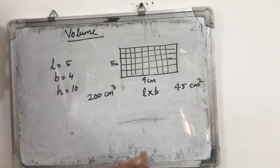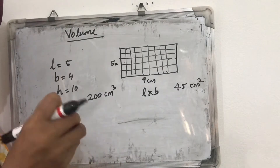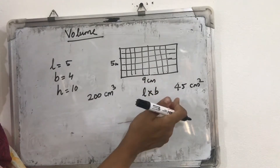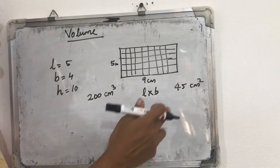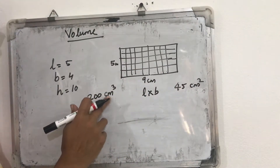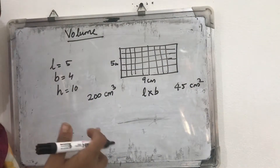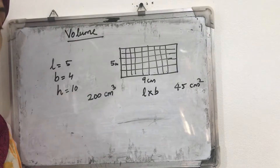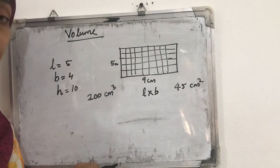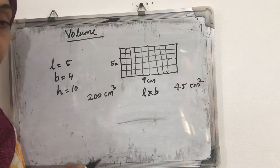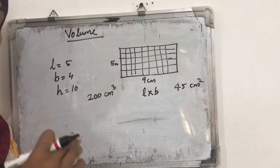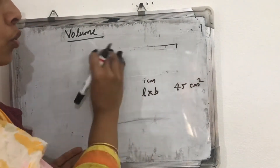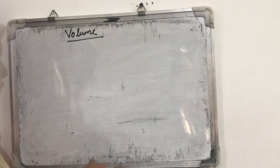The unit is cubic centimeters — because we are counting how many unit cubes there are. In plane shapes we used unit squares, so the unit was square centimeters; here we use unit cubes, so the unit is cubic centimeters or cm³. Since it is not always possible to count unit cubes directly, we find general equations for cube, cuboid, and cylinder.